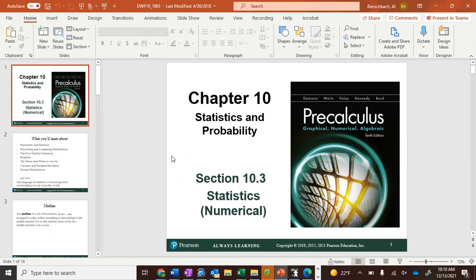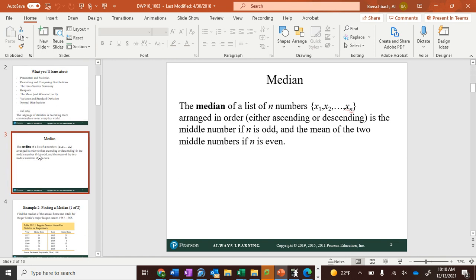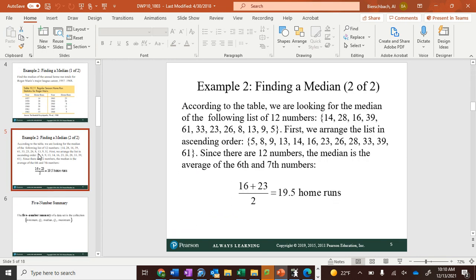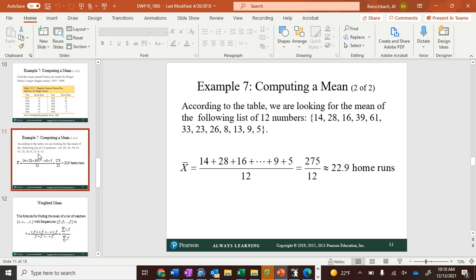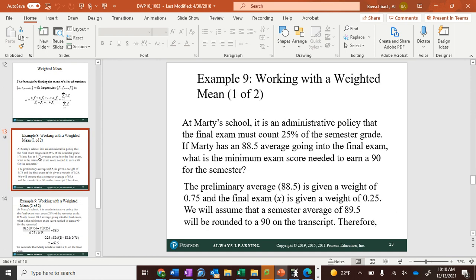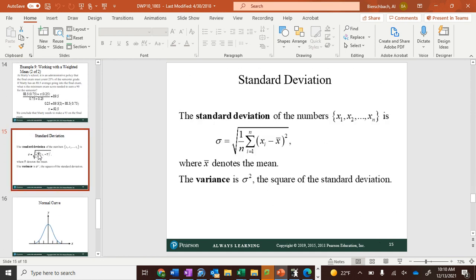Standard deviation. We talked about median, outlier, mean, computing a mean for a set of data, a weighted mean we just did. Standard deviation of numbers is the square root of 1 over the number of numbers from the sum of the first number to the last number of the number minus the mean.